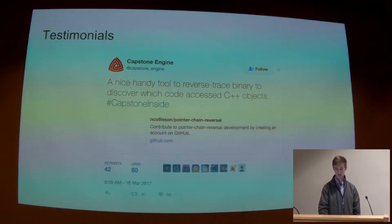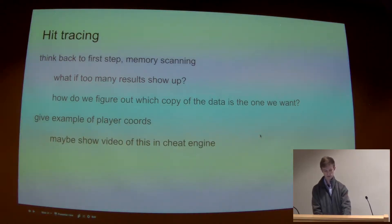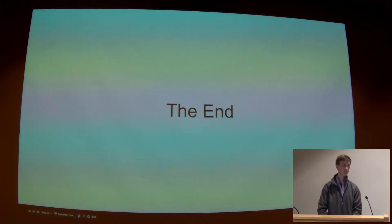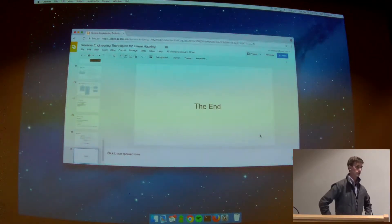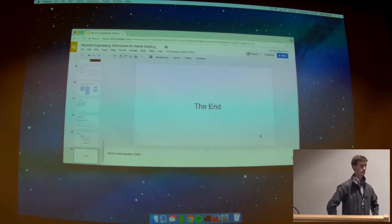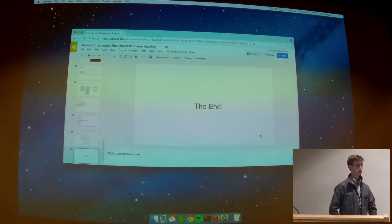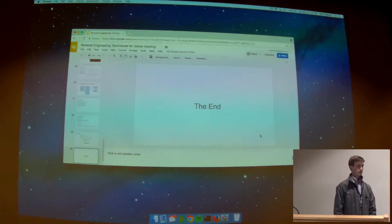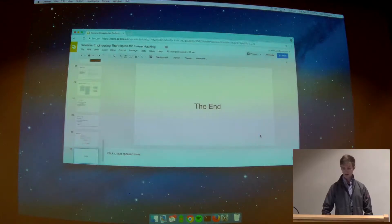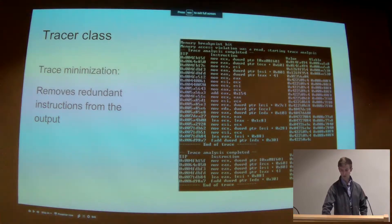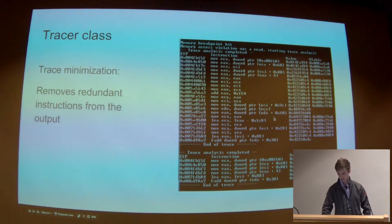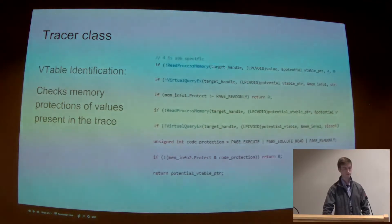Q&A — first question: a clarification about whether there's a correlation between each dereference and the V-table shown right next to it. Going back to the output: in the value column, this is the value currently in ESI, and then it does V-table identification starting with this value. It finds that the value at this address — if you interpret the value in ESI as an address — this is the value currently located at that memory address, which my tool thought was probably a V-table.